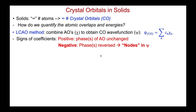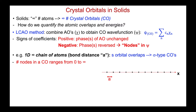If that sign is positive, then the phase of the atomic orbital is unchanged. If the sign of C is negative, then the phase is reversed, and a change in sign then in turn leads to a node in the wave function of the crystal orbital. For example, let's look at an infinite 1D chain of atoms.